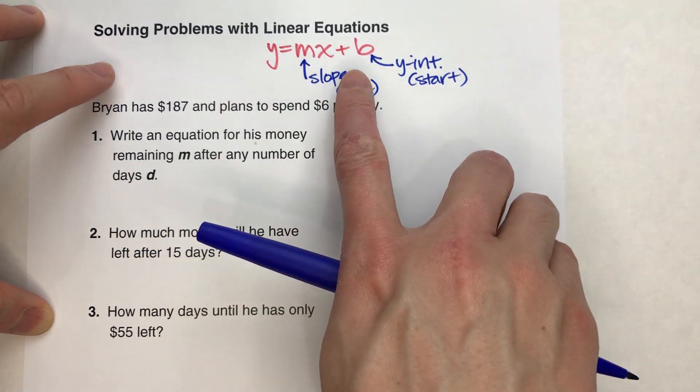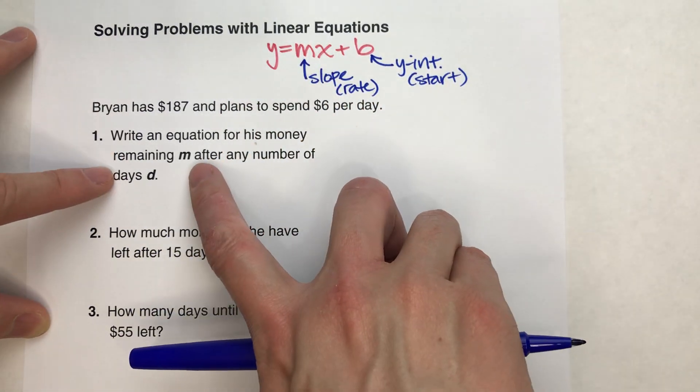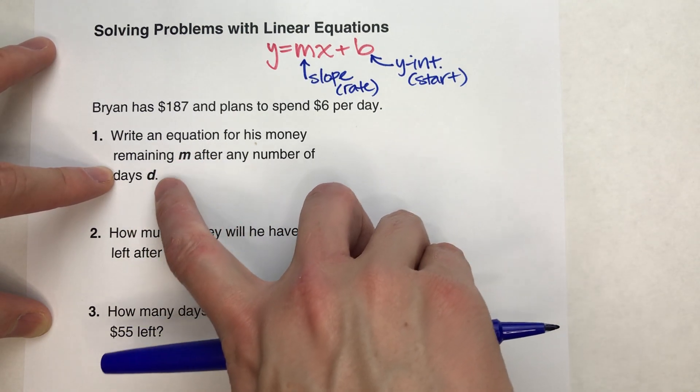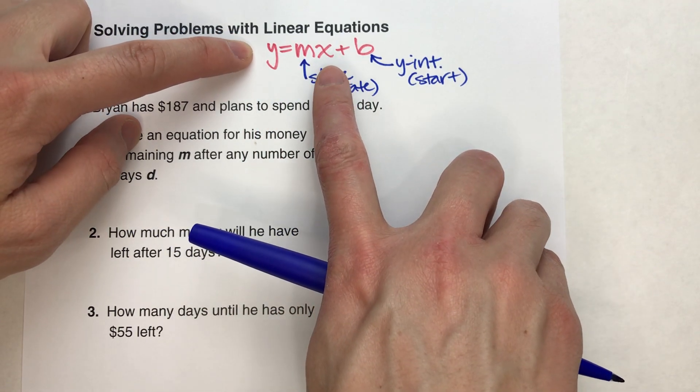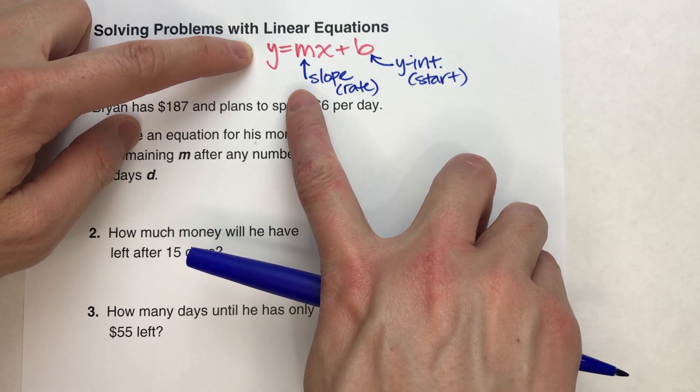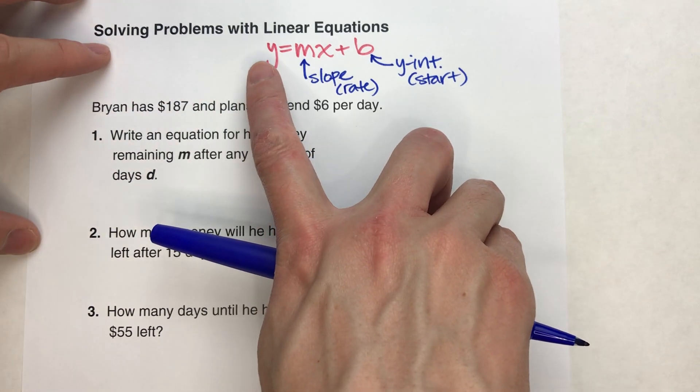And when you decide which variable goes where, for example, when we do our example, we're going to do m and d, we always have to think about which variable is it that we're trying to calculate? Which one are we trying to find out based on the other one?